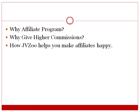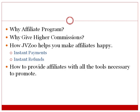JVZoo helps make your affiliates happy because it's all about instant payments — at the point of sale, affiliates get paid immediately. And if there is a refund, it's an instant refund: it's taken out of the affiliate's account, your business partner's account, and your account automatically. This makes life easy for both you and your affiliates. In future slides I'll talk a little more about how to provide affiliates with all the tools necessary to promote.